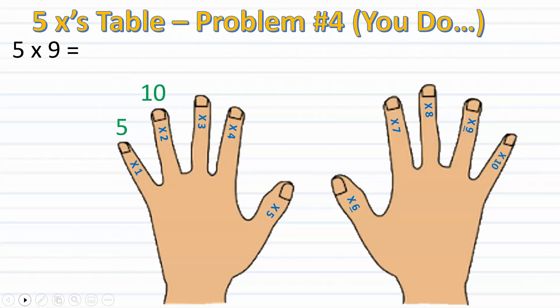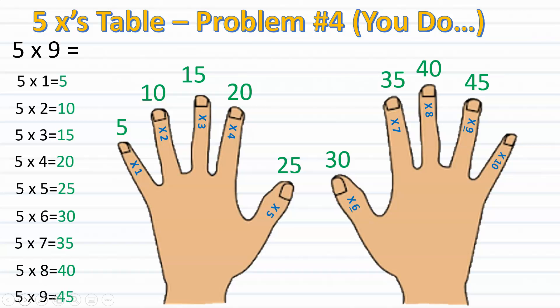5, 10, 15, 20, 25, 30, 35, 40, 45. Stop. Since I said 45 when I stopped at my ninth finger, therefore I know that 5 times 9 equals 45. So if you got 45, good job.